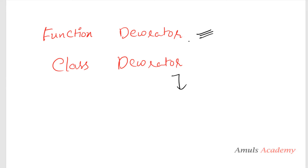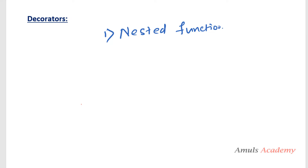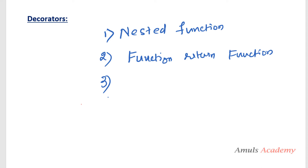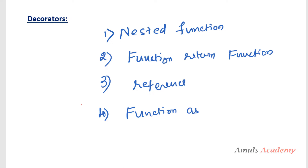In the last tutorial on decorators we will see about class decorators. To understand the decorator concept we need to know a few basic concepts. First, we need to know what a nested function is. Second, a function can return another function. Third, function names are references — if I just mention the function name, that is nothing but the reference to that function, that is the memory location of that function. And fourth, we can use functions as parameters of another function.